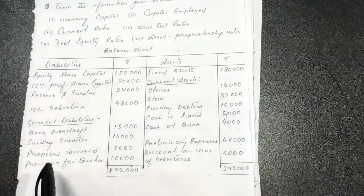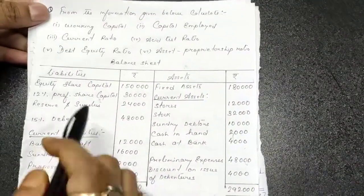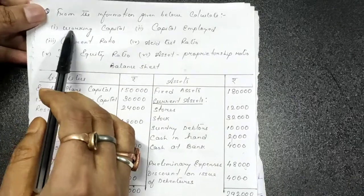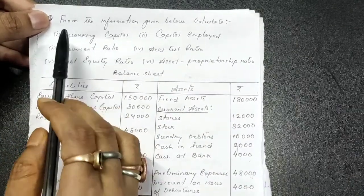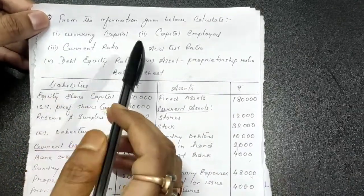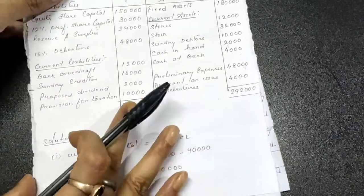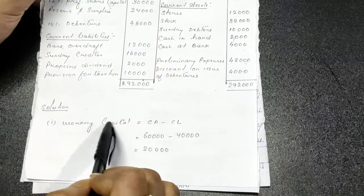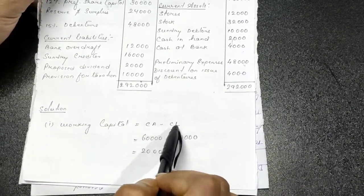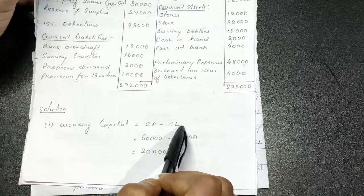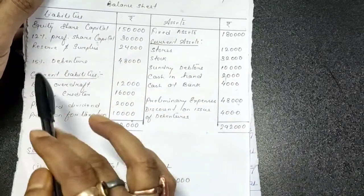Let us start the solution. The first thing we need to find is working capital. The formula for working capital is very simple: it is current assets minus current liabilities. So from this question you have to find out your current assets and your current liabilities.